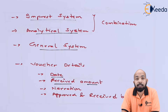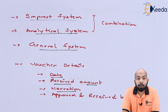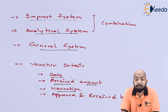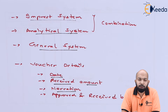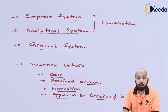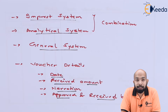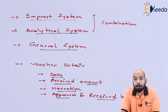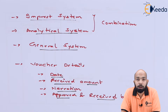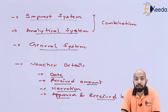The second field is the received amount — how much amount has actually been received. The narration refers to the kind of transaction or expense happening for that specific amount. Finally, 'approved and received by' gives the authority who has signed it and who has received it — both the receiver and the approver must be part of this specific voucher.